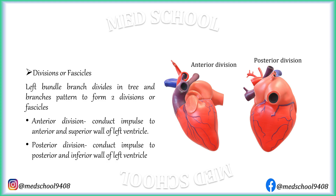The anterior division or fascicle conducts impulse to the anterior and superior wall of the left ventricle, and its direction of conduction is toward superior and left. The posterior division or fascicle conducts impulse to the posterior and inferior wall of the left ventricle, and its direction of conduction is toward inferior.